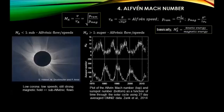The Alfvén Mach number shows how the plasma movement compares to the magnetic field - how much kinetic energy there is with respect to the magnetic energy. It is given by the ram pressure from plasma motion over the magnetic pressure. If the plasma speed is below the Alfvén speed, the flow is sub-Alfvénic. A good example is the local corona, where the wind hasn't had time to accelerate yet and the magnetic field is strong, giving a Mach number lower than one.